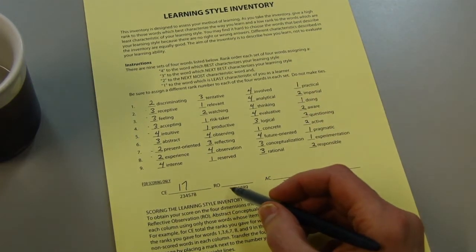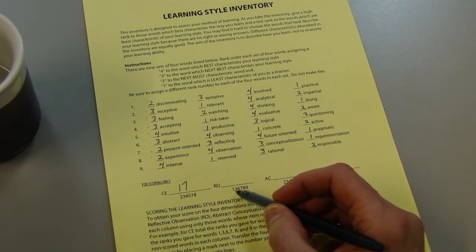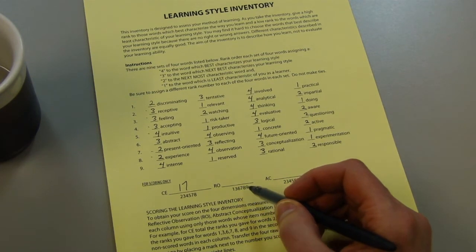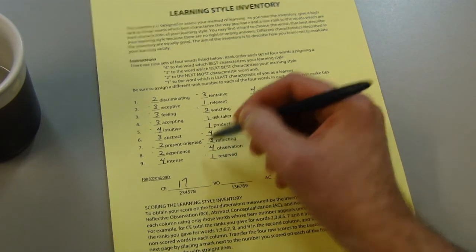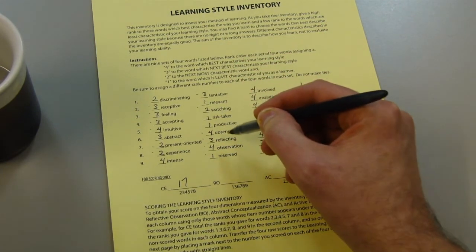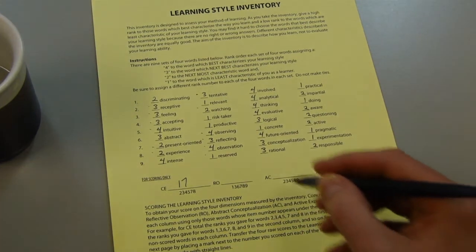In the RO column, I'm looking at questions 1, 3, 6, 7, 8, 9. So I'll add up those numbers and I also get 17.